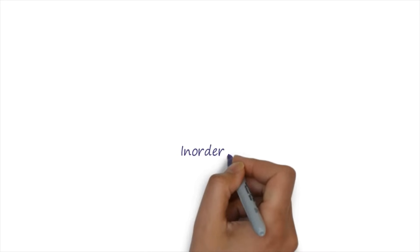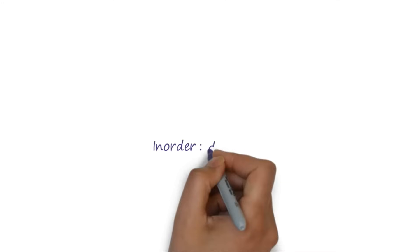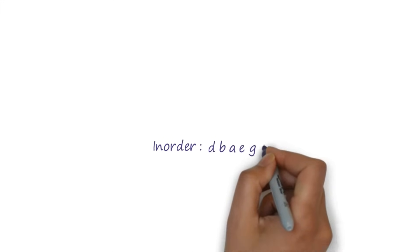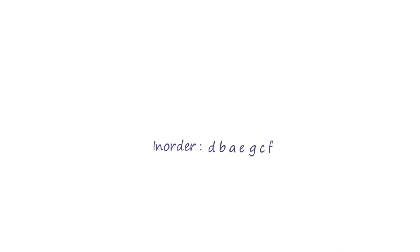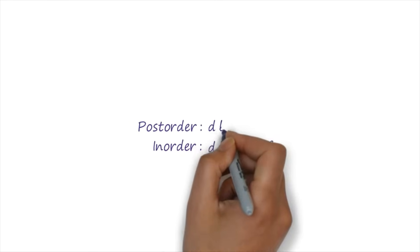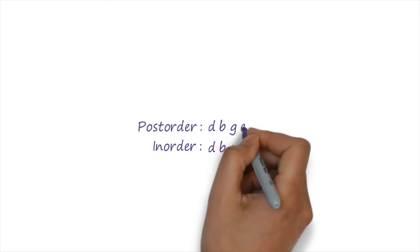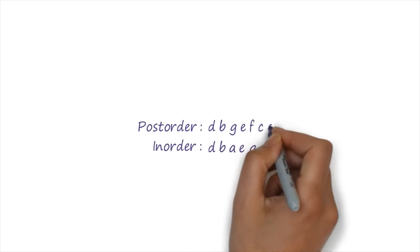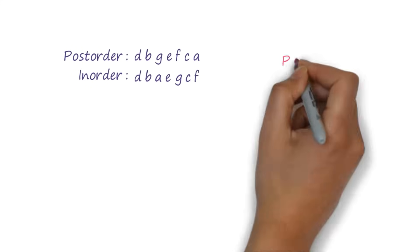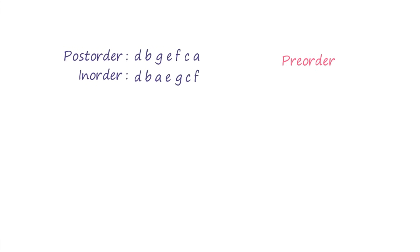The next problem: in-order traversal is given as D, B, A, E, G, C, and F. The post-order traversal is given as D, B, G, E, F, C, and A. What we have to find out is the pre-order traversal.